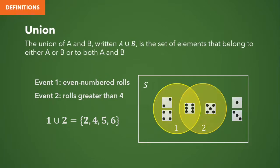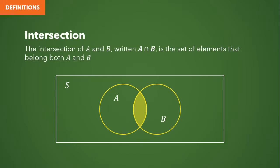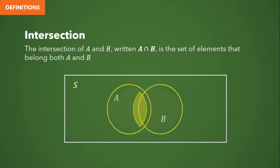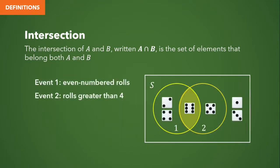On the other hand, the intersection of A and B, written with an inverted U symbol, is the set of elements that belong to both A and B. So the intersection of the events from earlier would be the set containing the number 6, because it's the only element common to both events. For disjoint events that don't have common elements, their intersection would be an empty set.